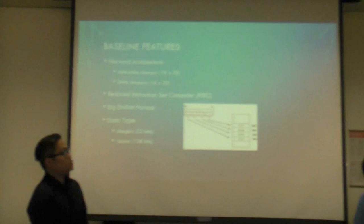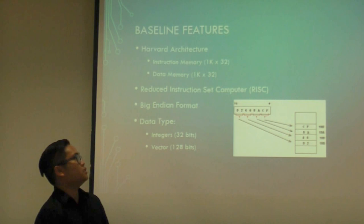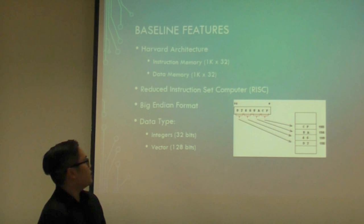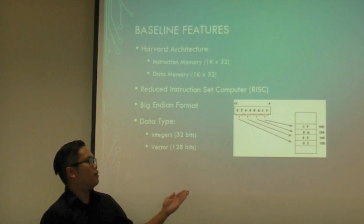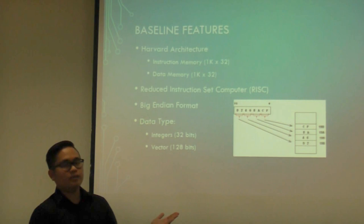Here we have our baseline features. We have a Harvard architecture with two separate memory modules for instruction and data, both being 1K by 32. Next we have it as a reduced instruction set computer. It's also big-endian format — the most significant byte would be on the first addressing mode. We also have data types as integers with 32 bits and vectors with 128 bits, which is part of our enhancement.